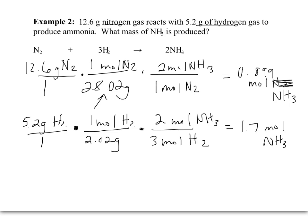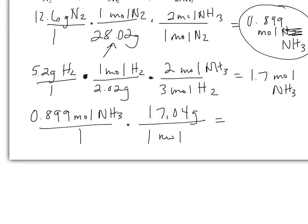Again, I pick the mole amount that is smaller. We're going to run out of nitrogen before we run out of hydrogen. But the question is for the mass of ammonia that is produced. So I'm going to convert my 0.899 moles of ammonia to grams. I get 15.3 grams of ammonia.